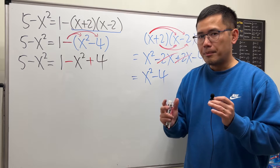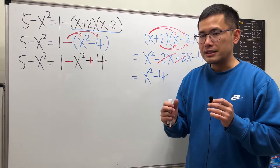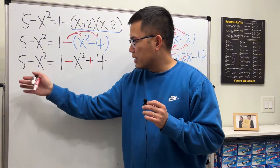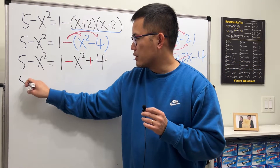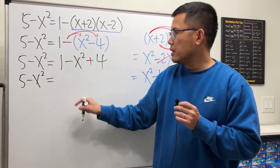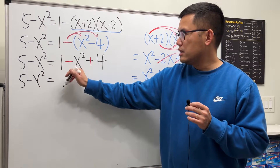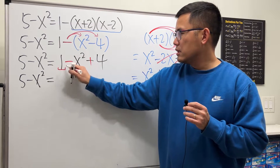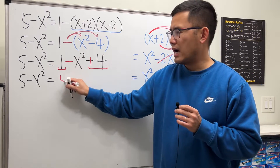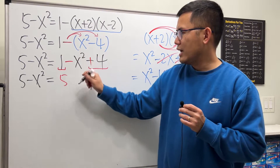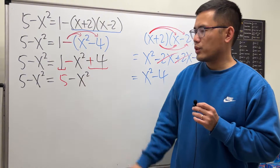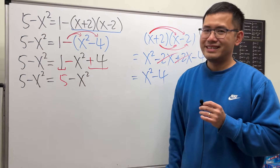Now let's combine like terms on the right-hand side. The left side remains 5 minus x squared. On the right, 1 plus 4 equals 5, and we also have minus x squared. So the right side becomes 5 minus x squared.